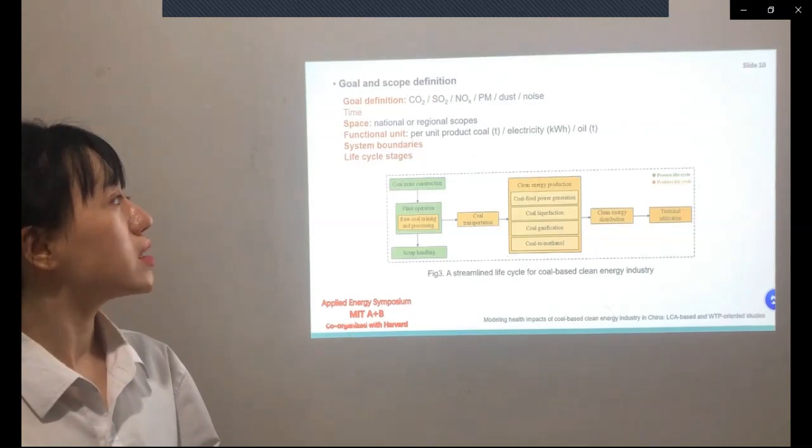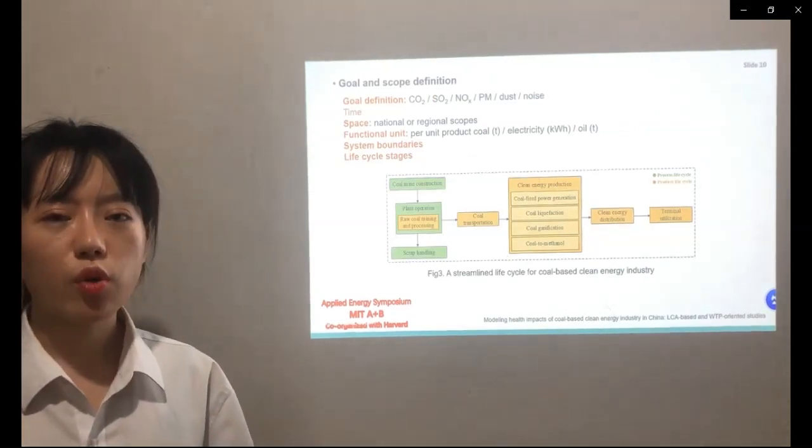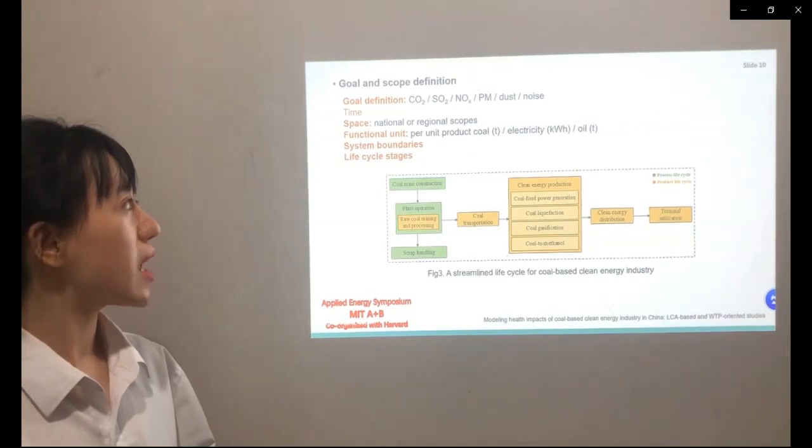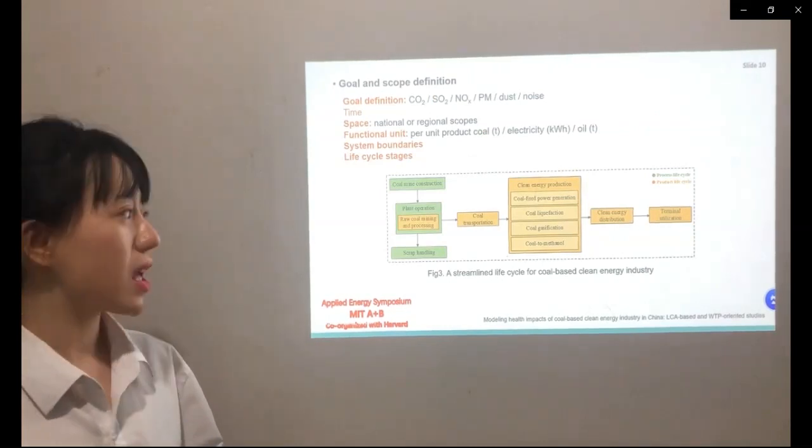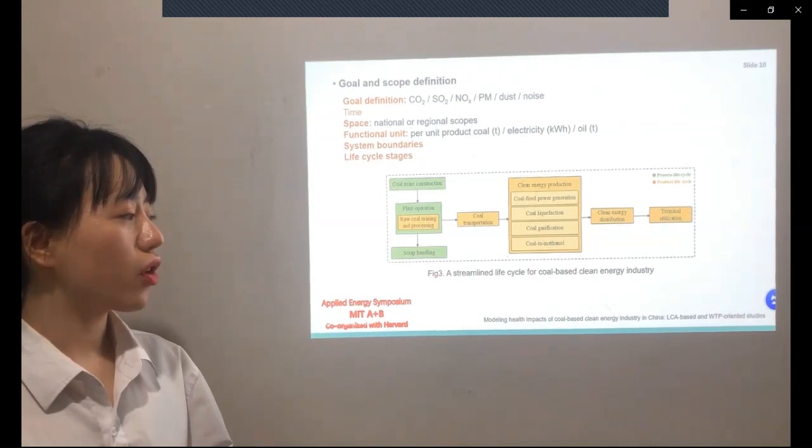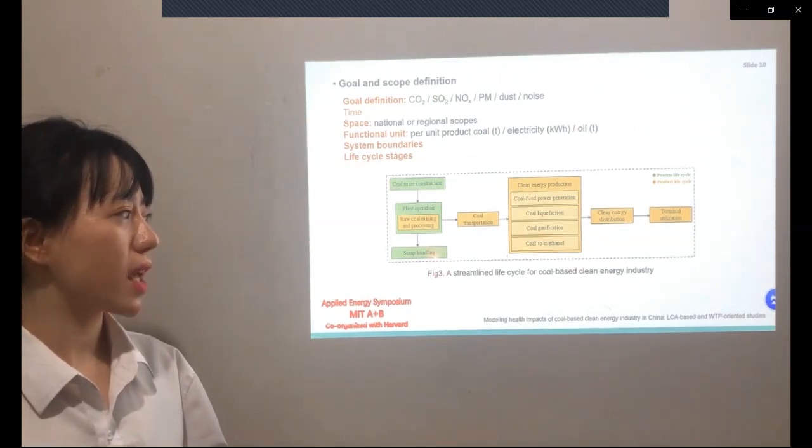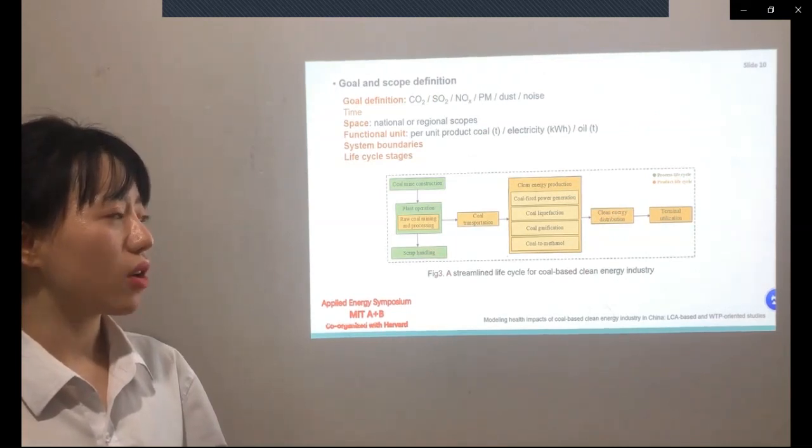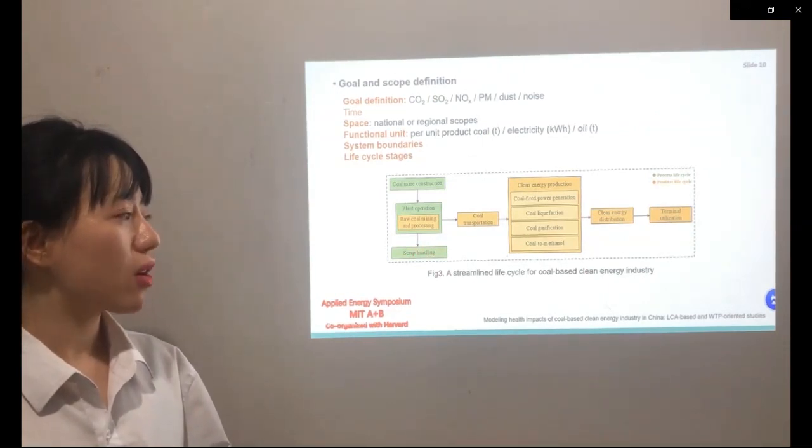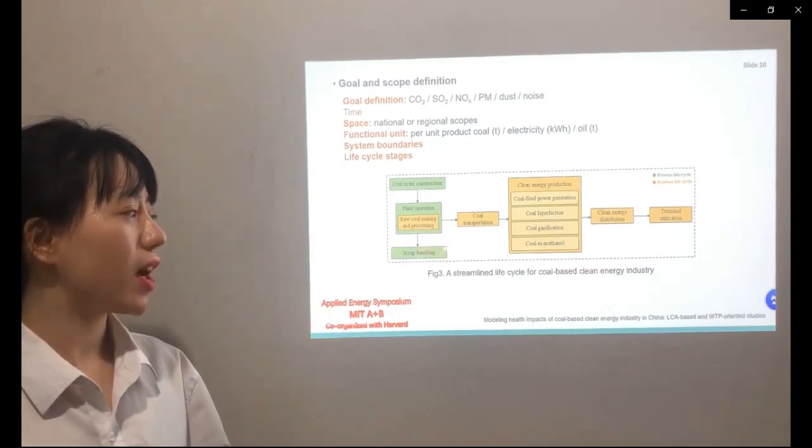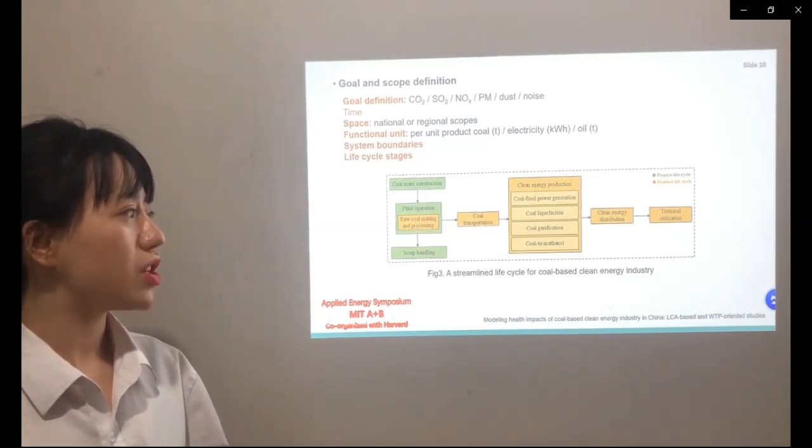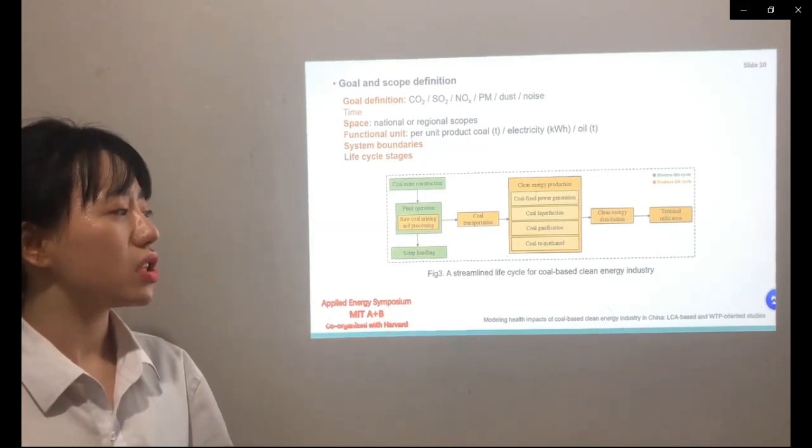As for goal and scope definition, we need to clarify the primary intentions and direction of life cycle analysis at first, and the critical step is dividing life cycle stages. As shown, we can evenly divide each kind of coal-based energy industry into numerous stages. For example, the coal-based power generation can be divided into coal mining, coal transportation, coal combustion, and thermal utilization.